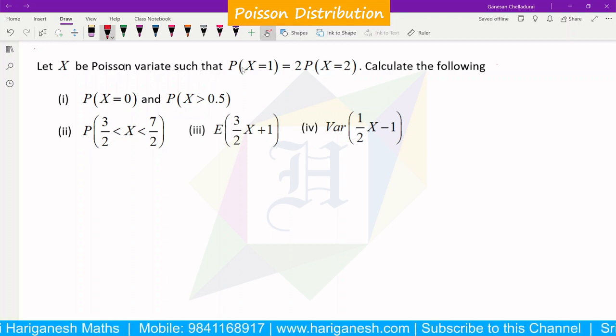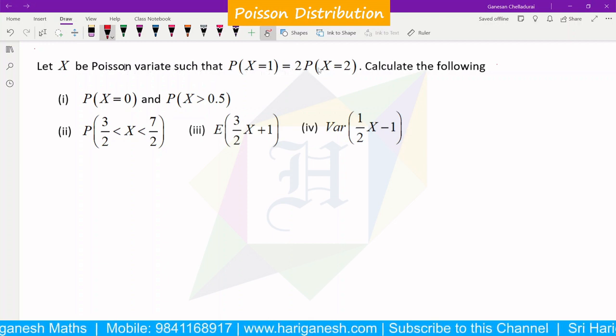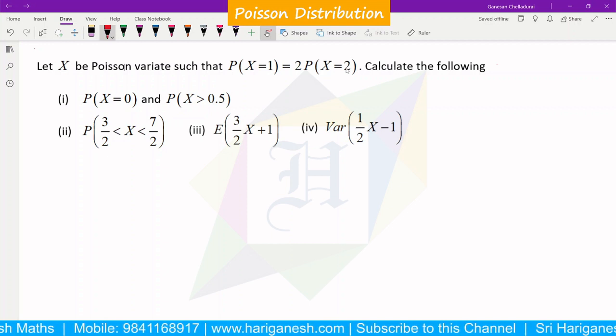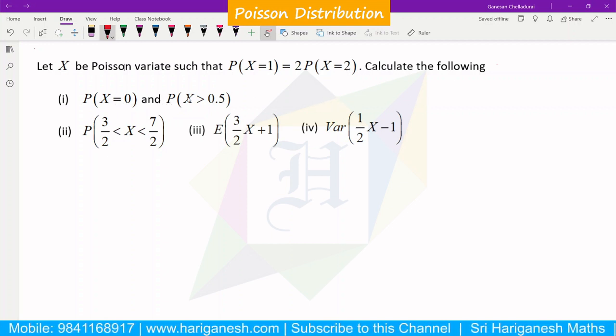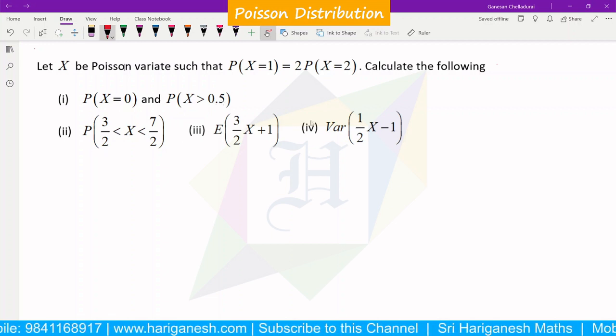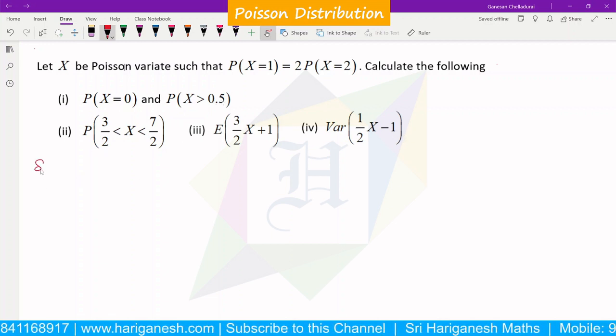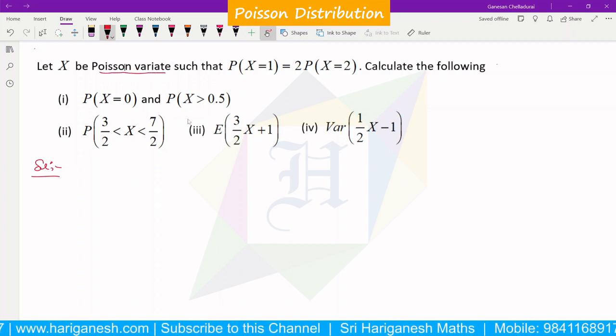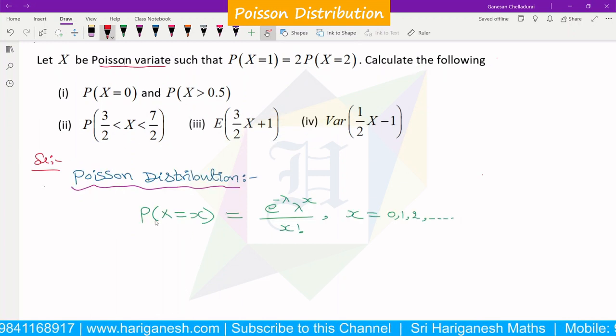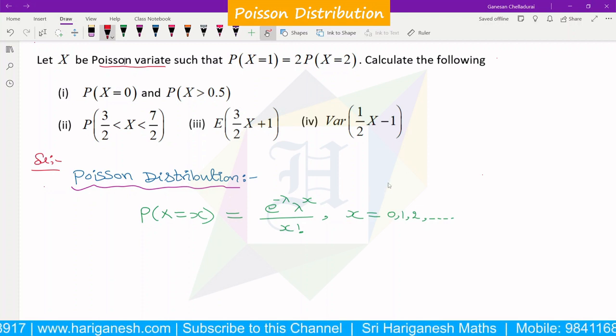Let X be a Poisson variate such that P(X = 1) is twice the power of P(X = 2). Calculate the following: P(X = 0) and P(X > 0.5). That is the first question. This is the Poisson distribution. Now what is the probability mass function?